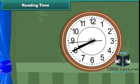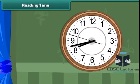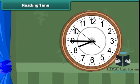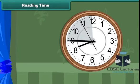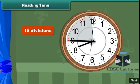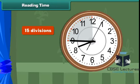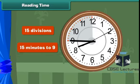For example, suppose the hour hand is at 8 and the minute hand is at 9. Between 9 and 12 there are 15 divisions. This means after 15 minutes it will be 9 o'clock. This time is read as 15 minutes to 9.